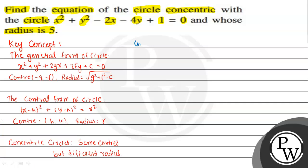The given equation is x² + y² - 2x - 4y + 1 = 0. This is one circle, and we need a second circle which is concentric with it but has radius 5. First, we need to find the center of the given circle by comparing with the general form.